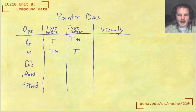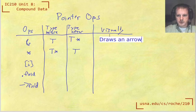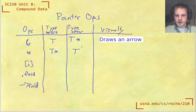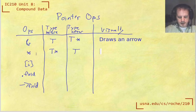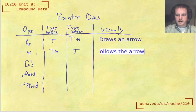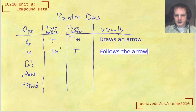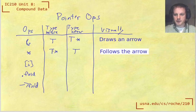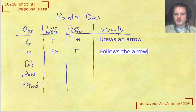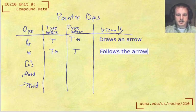So like the address of operator, what does that do visually? That draws an arrow to whatever we're pointing to. Whereas the dereference operator, the star, that follows the arrow, right? So this only applies to pointer types, meaning that there's some arrow going on. And when you dereference it, you follow the arrow in the diagram.